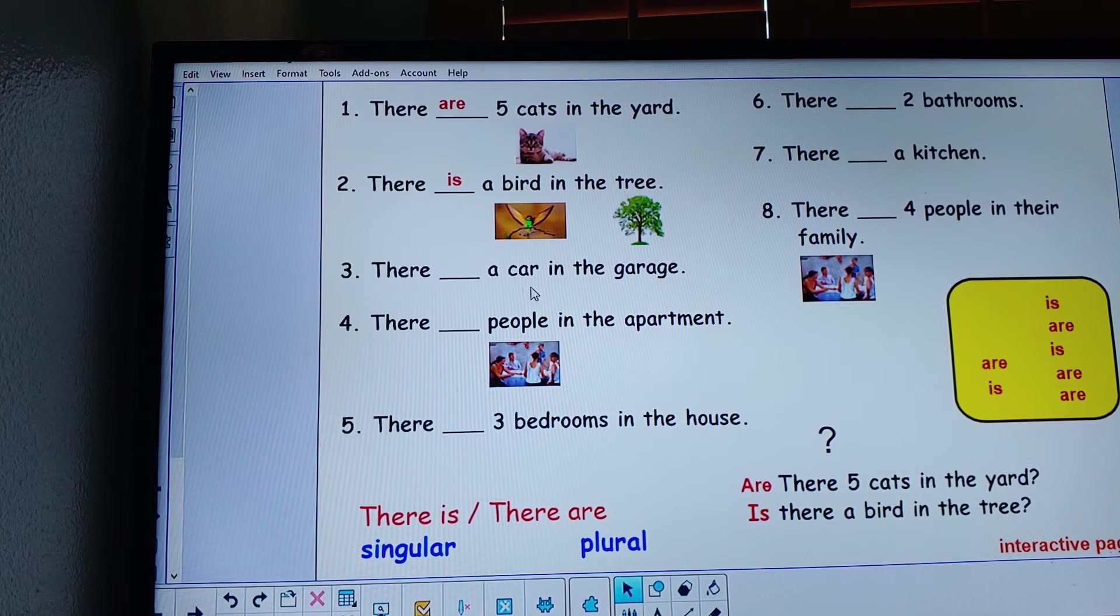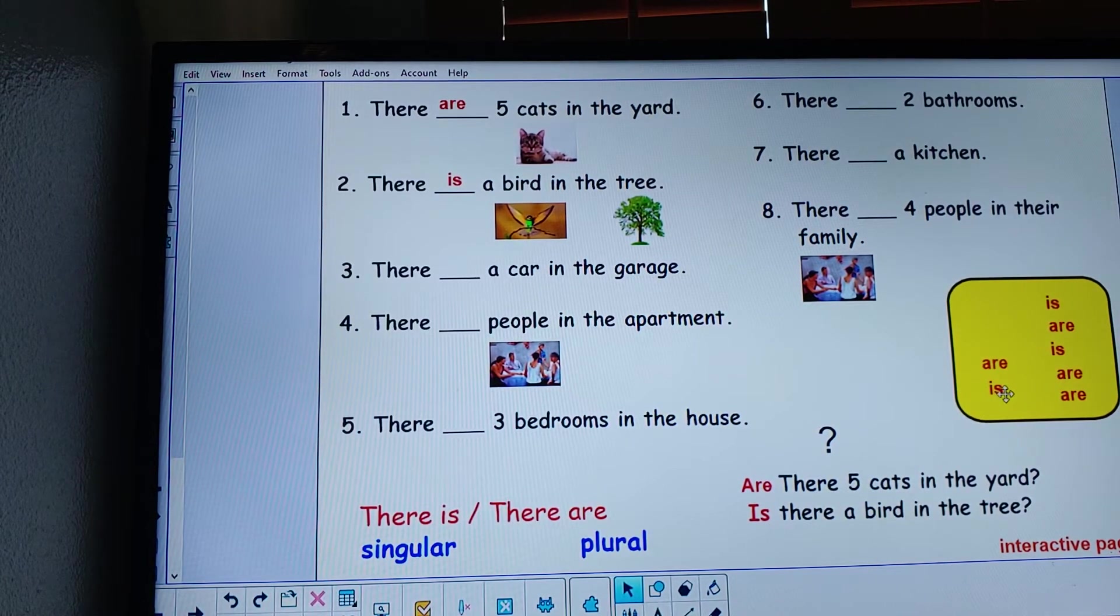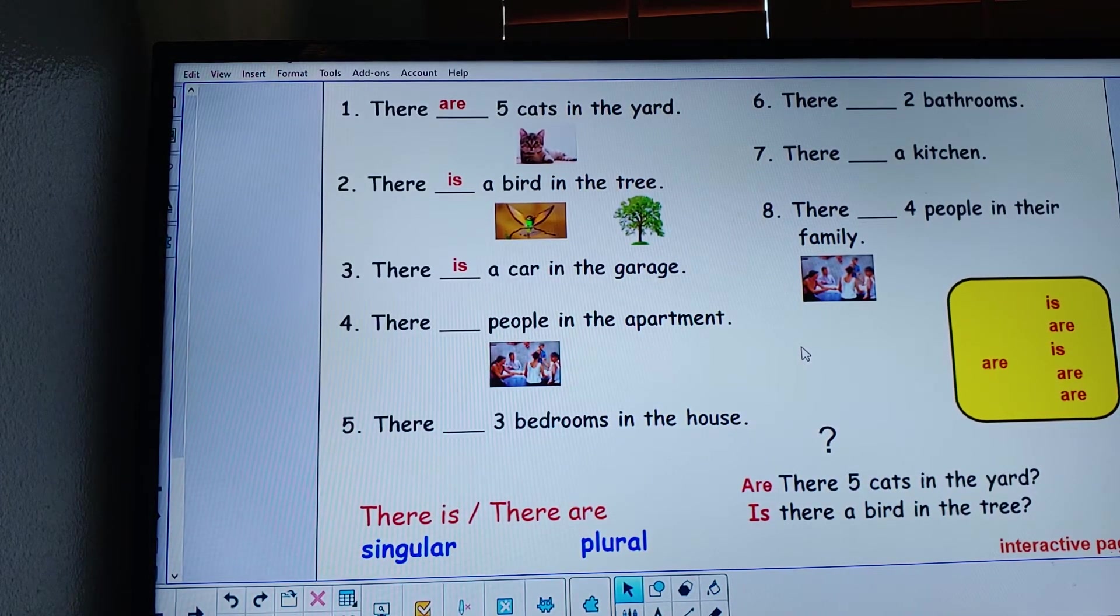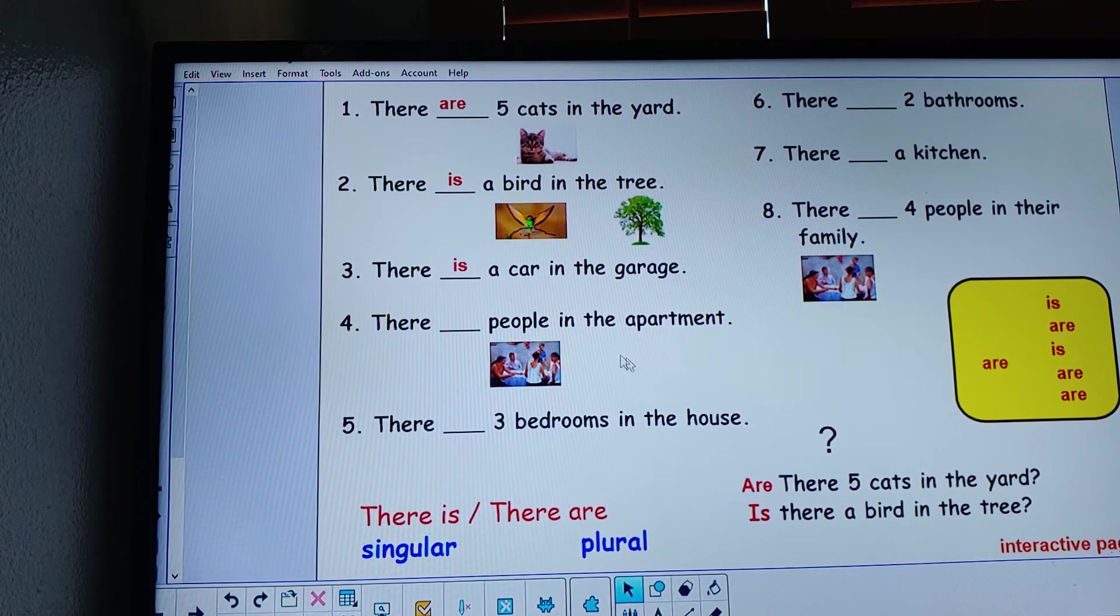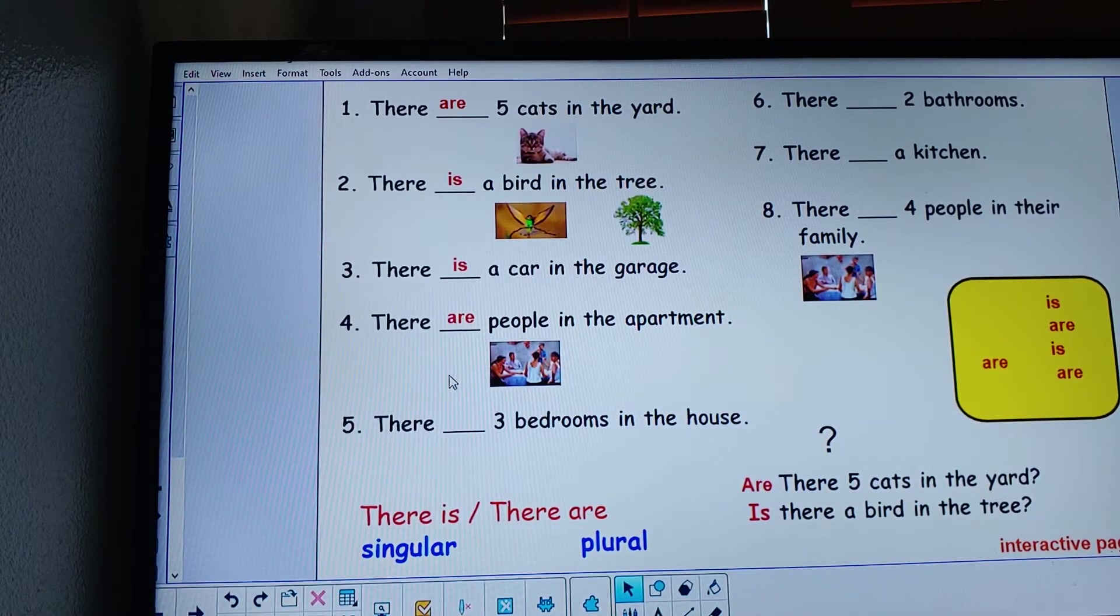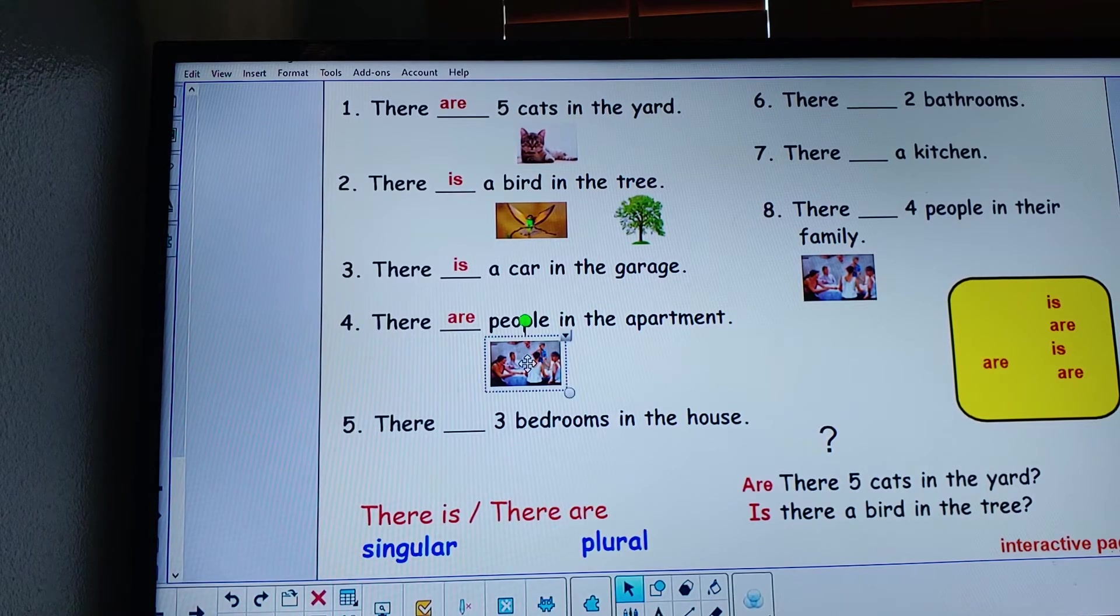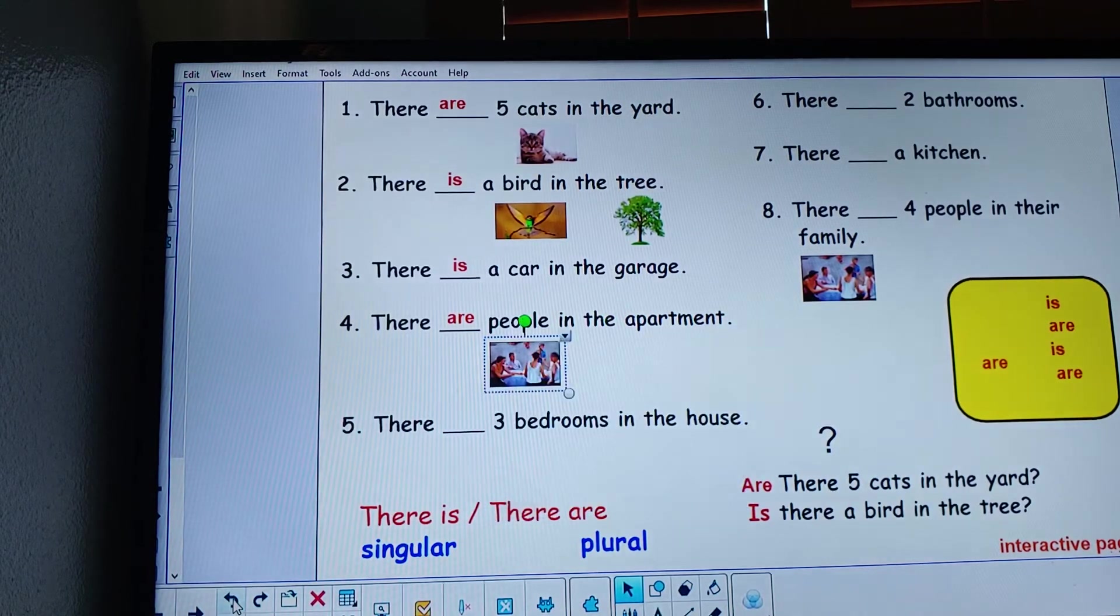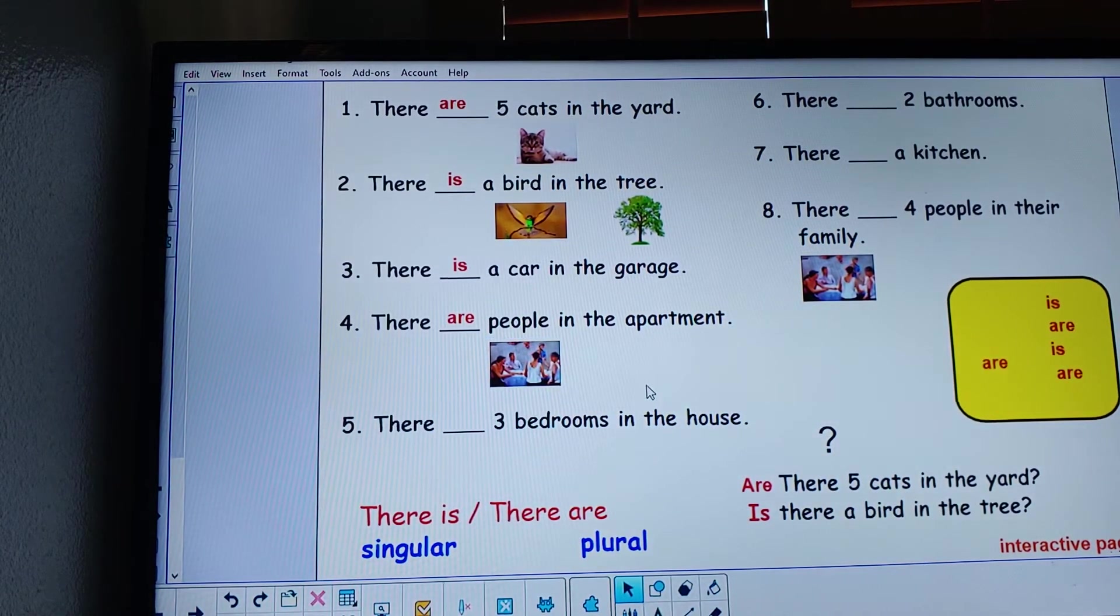A car. One. There is a car in the garage. People. Plural. Are. There are people in the apartment.